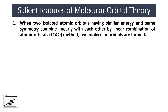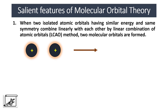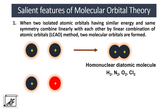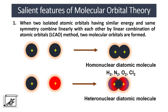Let's understand with the help of an example. These are the two orbitals of the same element. When they combine with each other, a homonuclear diatomic molecule is formed — for example, hydrogen, nitrogen, oxygen, chlorine, etc. If these atomic orbitals are of different elements but have comparable energy, they can overlap with each other, and the molecule formed is called a heteronuclear diatomic molecule — for example, carbon monoxide, cyanide, HCl, nitric oxide, etc.